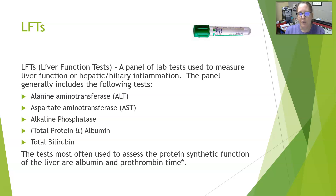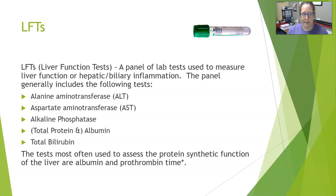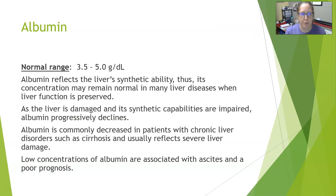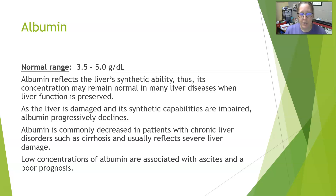If those things become decreased — low albumin and an increased prothrombin time because of a low amount of clotting factors — then we can suspect that the liver is having problems manufacturing those things. The normal range for albumin is 3.5 to 5.0 grams per deciliter, and it does reflect the liver's synthetic ability — its ability to manufacture protein, especially albumin.